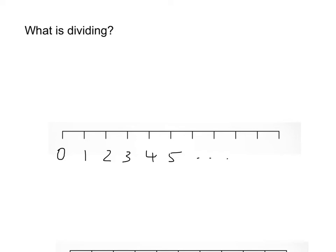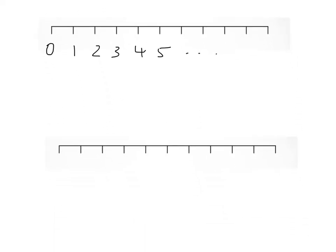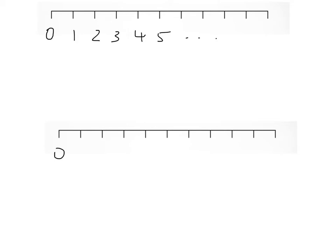Dividing is a way of counting but in a different number system. For instance, if we counted in 2's it goes 0, 2, 4, 6, 8, 10 and so on.